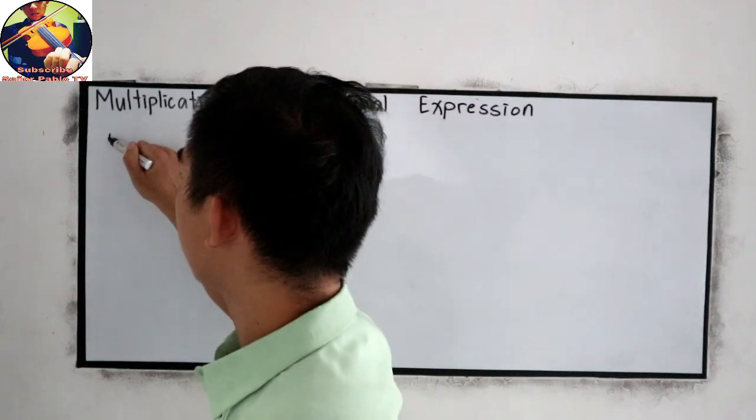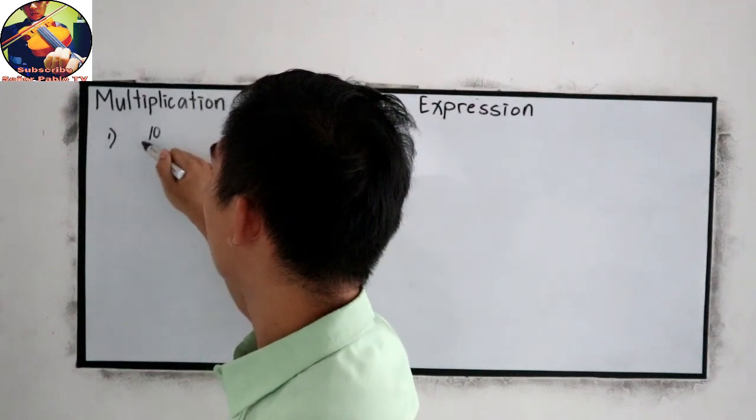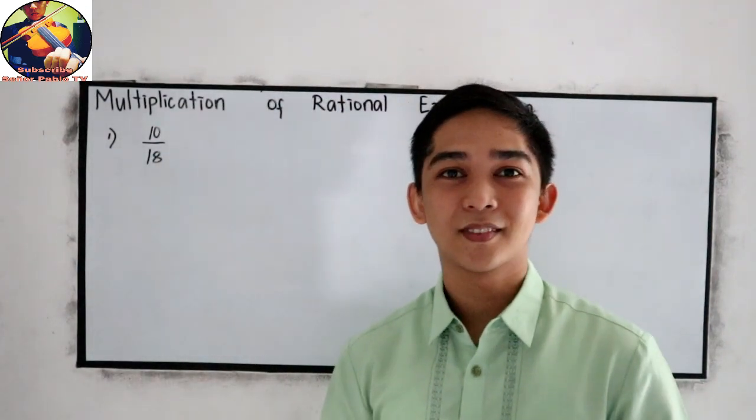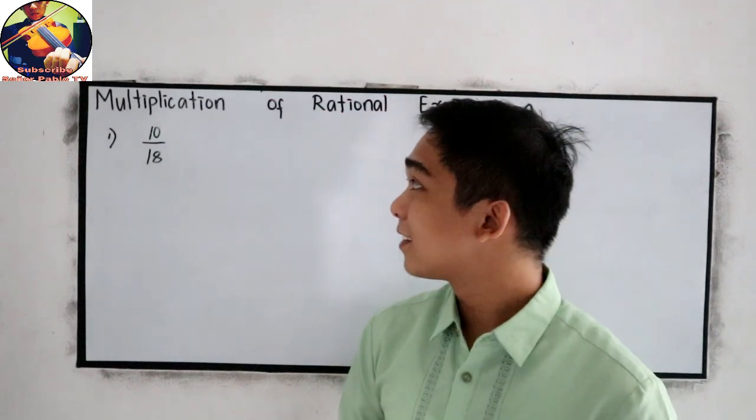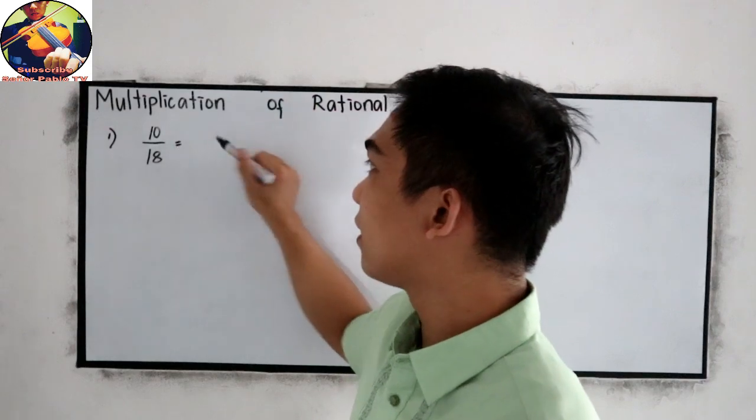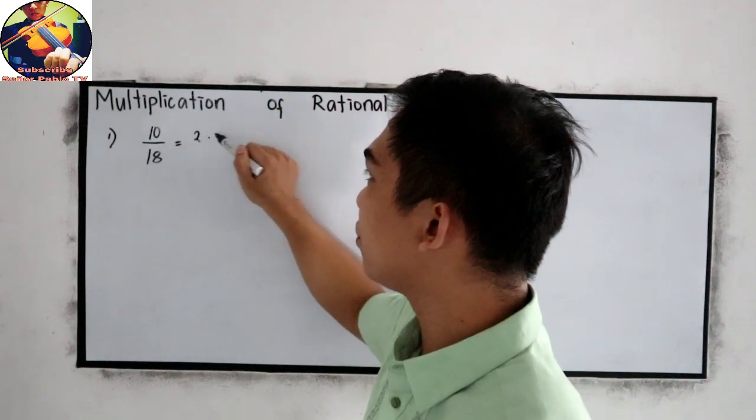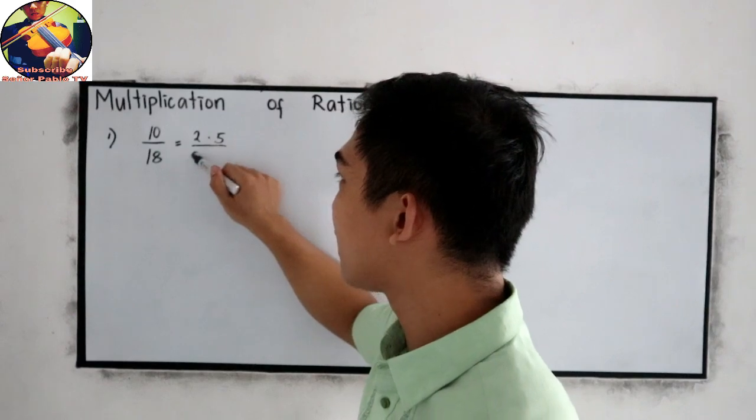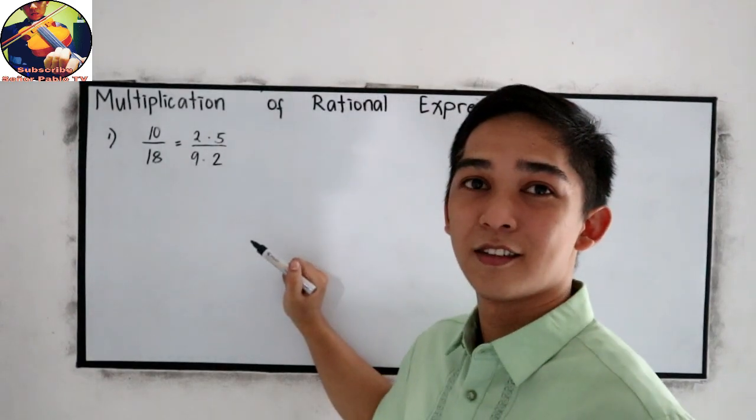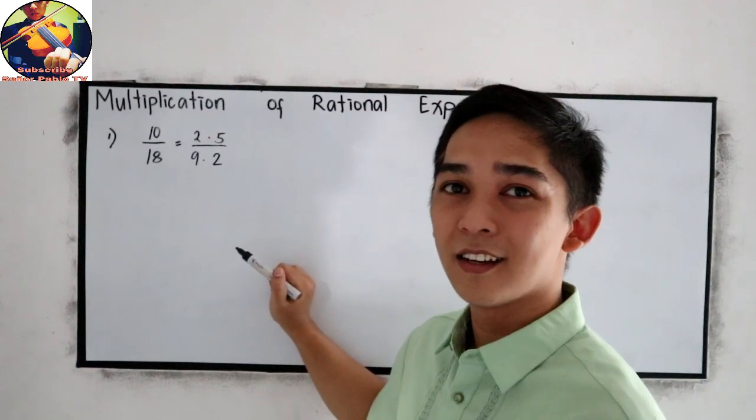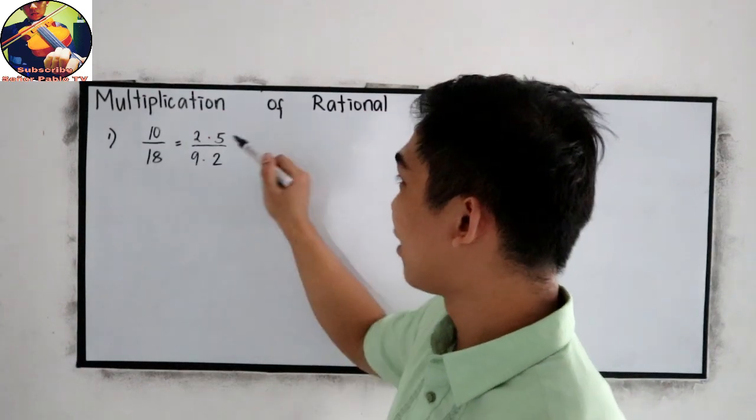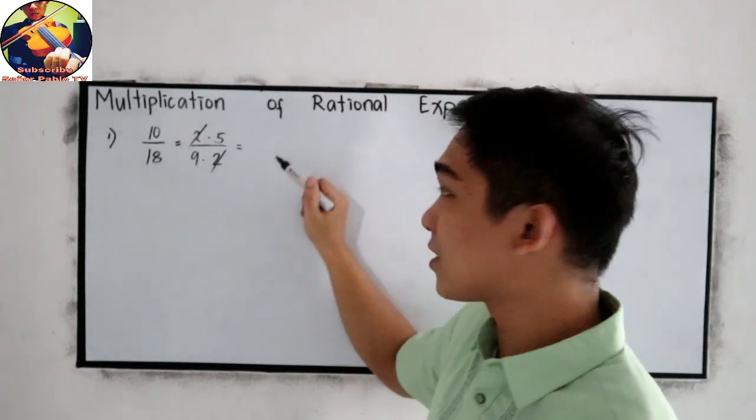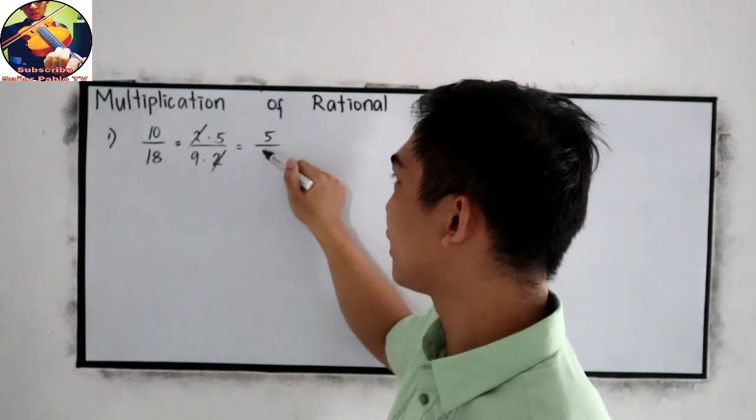Let's say we have 10 over 18. To simplify that, we know that the factors of 10 are 2 and 5. And for 18, factors are 9 times 2. And now to simplify, cancel the common factors. The common factor here is 2 and 2, and our final answer is 5 over 9.